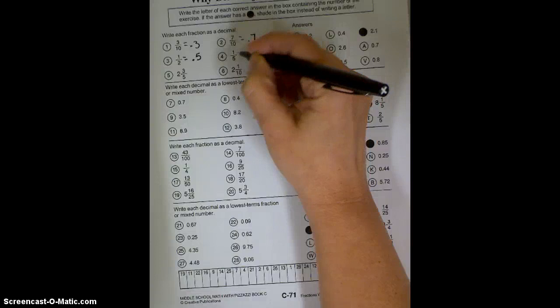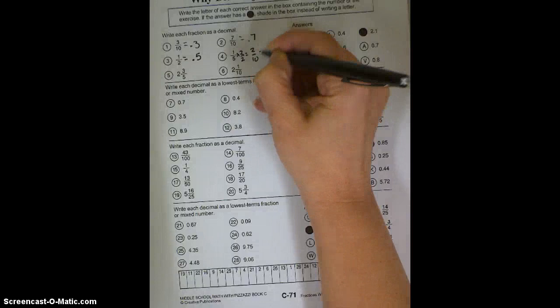1 fifth, this is the one you're probably doing mentally, where you multiply by 2 over 2. And you get 2 tenths, which can be written as .2.